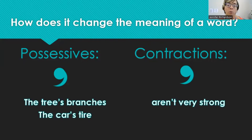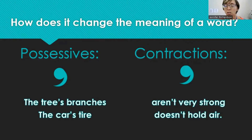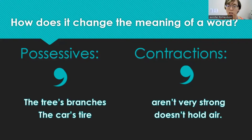Here's another example: the car's tire. The car owns the tire — that shows possession. Now as a contraction: doesn't hold air. Doesn't is a contraction for does and not, a combination of the two words. You'll notice if it did say does not, the O is missing — the apostrophe takes the place of the missing O. So the car's tire is possession, and doesn't hold air is a contraction.